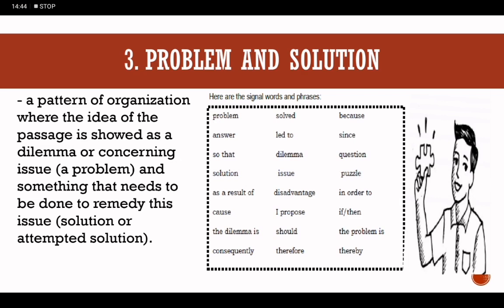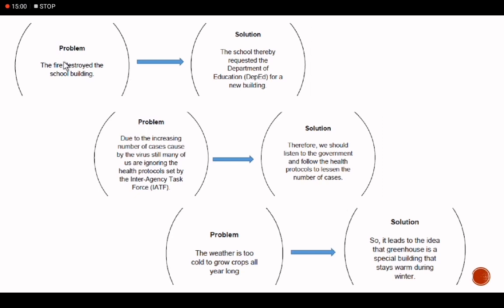Here are the signal words and phrases for problem-solution — please familiarize yourselves with these words. Examples: Problem: 'The fire destroyed the school building.' Solution: 'The school thereby requested the Department of Education for a new building.' Problem: 'Due to the increasing number of cases caused by the virus, still many of us are ignoring the health protocols set by the IATF.' Solution: 'Therefore we should listen to the government and follow the health protocols to lessen the number of cases.' Problem: 'The weather is too cold to grow crops all year long.' Solution: 'A greenhouse is a special building that stays warm during winter.'